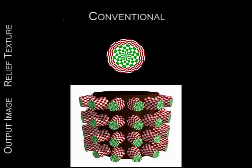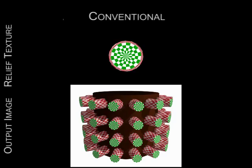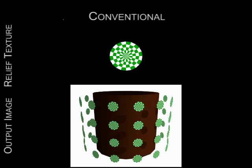Conventional relief texture mapping samples poorly along the normal of the surface. Here the brown surface is texture mapped with a cone shape relief. Notice how the sampling rate degrades as the base shrinks. Once the base becomes smaller than the top, the sides are not sampled at all.